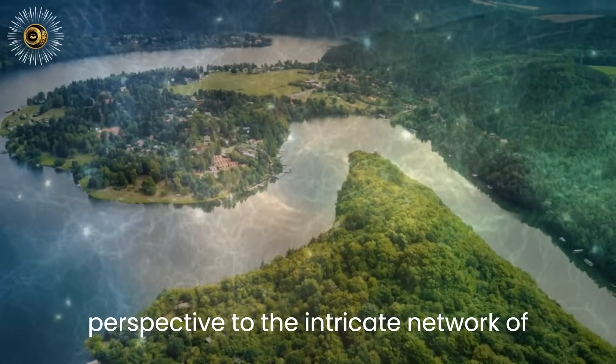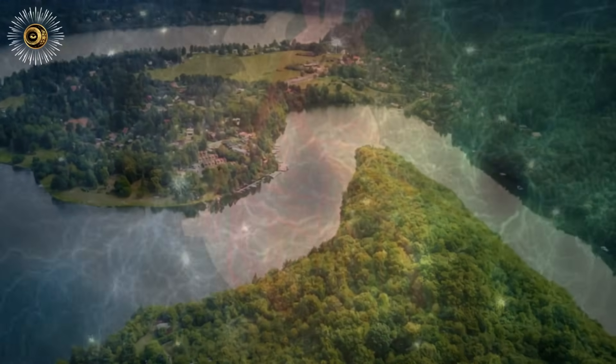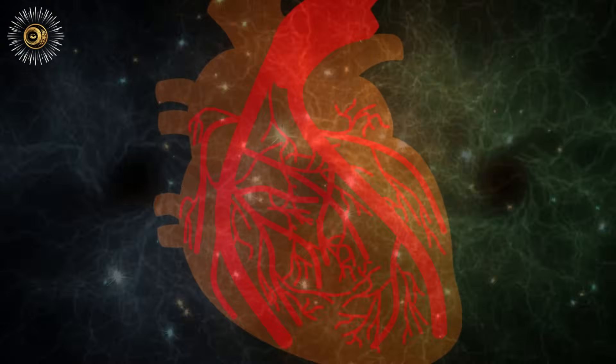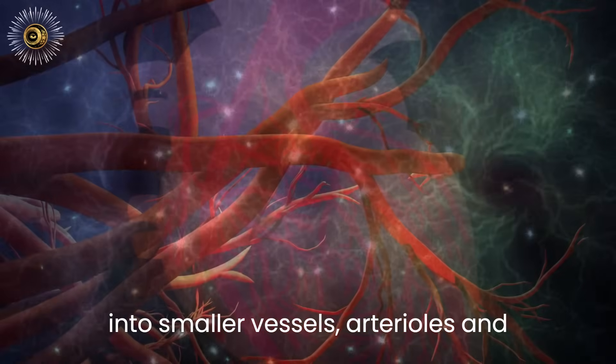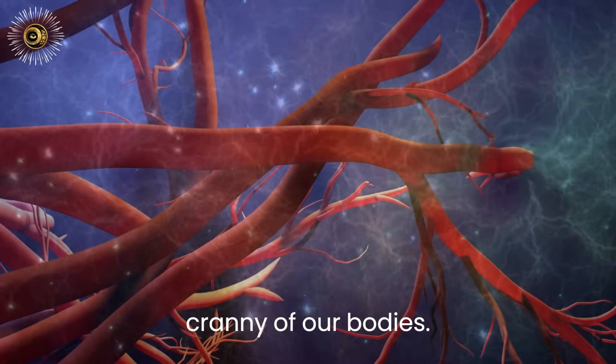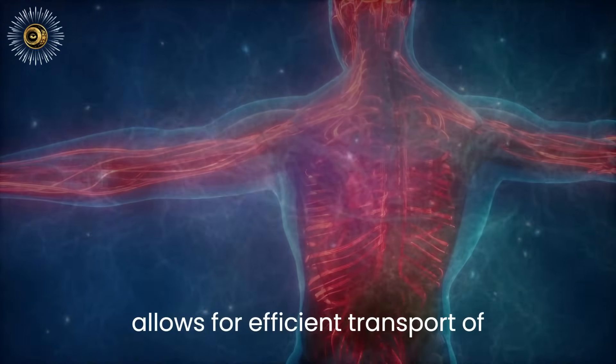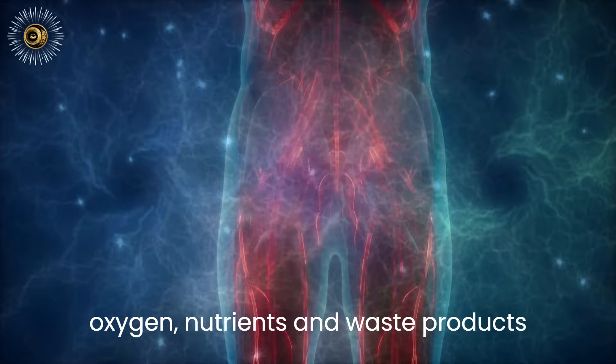Now, let's shift our perspective to the intricate network of our circulatory system. The human blood vessels follow a similar branching pattern. Starting with the main arteries and veins, they progressively divide into smaller vessels, arterioles, and capillaries, reaching every nook and cranny of our bodies. This fractal-like arrangement allows for efficient transport of oxygen, nutrients, and waste products throughout our system.